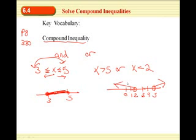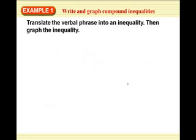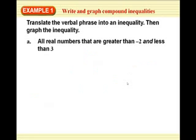Let's take a look at these. Translate the verbal phrase into an inequality, then graph the inequality. All real numbers that are greater than negative 2 and less than 3. So AND means it's going to be compound. The smaller number goes on the left, the bigger number on the right. So it is greater than negative 2 and less than 3. Here's negative 2, here's 3. You circle them. And there's our graph right in between.